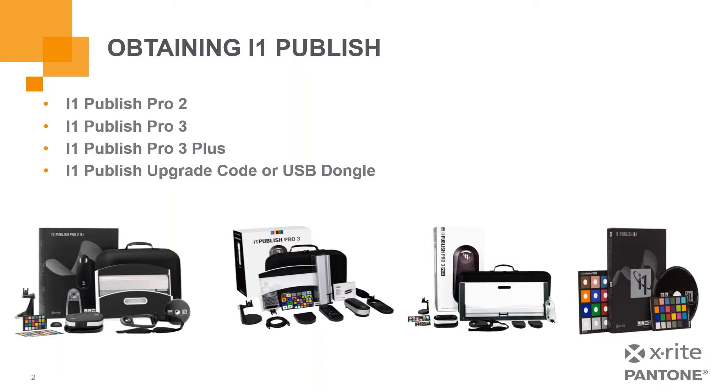We also sell the i1 Publish as a USB dongle for those who may use the i2 chart reader or need the license in a more portable fashion. When purchasing or using a device with the i1 Publish license, you have access to all the features found in the i1 Basic and the i1 Photo license packages.